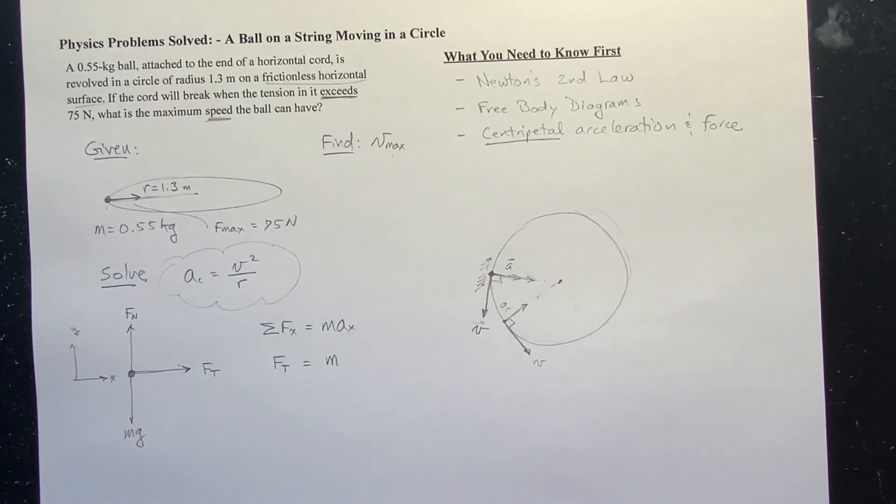So it only changes the direction of the velocity vector, not the magnitude, which we call the speed. The speed stays constant. The direction changes.